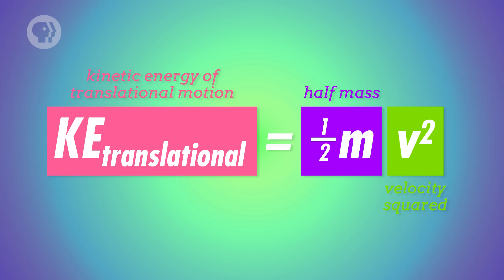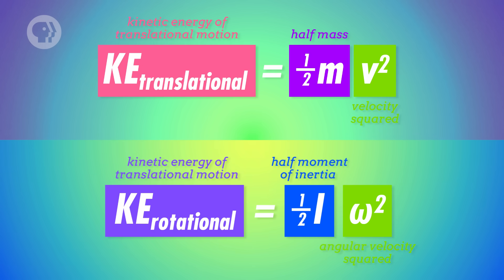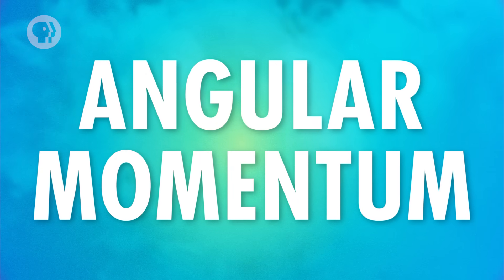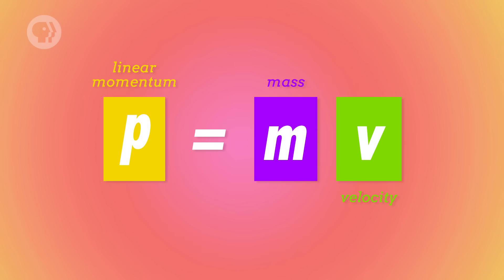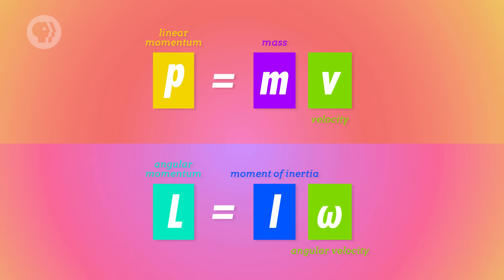When an object is rotating, some of its kinetic energy also takes the form of rotational motion. Calculating rotational kinetic energy is straightforward: the moment of inertia affects rotational motion the same way that mass affects translational motion, and rotating objects have angular velocity just as translating objects have linear velocity. So the kinetic energy of an object's rotational motion is half of its moment of inertia times its angular velocity squared. There's also angular momentum, which is equal to an object's moment of inertia times its angular velocity.